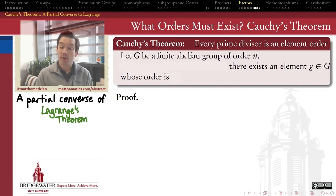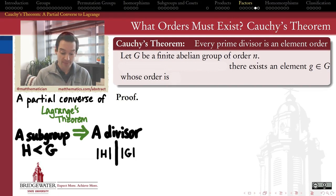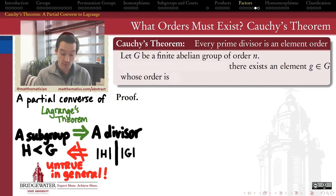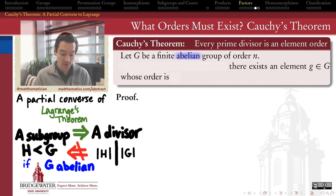To set the stage, remember what Lagrange's theorem says: if I have a subgroup H of a finite group G, then its order is a divisor of the order of the big group. The converse — that if you give me a divisor of the order of G I can provide a subgroup whose order is that divisor — is untrue in general. But Cauchy's theorem adds a couple of key assumptions. The first is that our full group G is an abelian group. That's a heavy-handed assumption, but it turns out it'll be necessary to get the converse we're looking at.